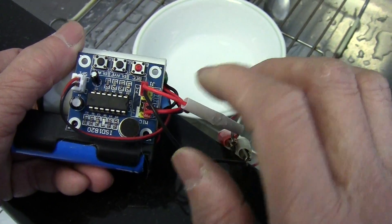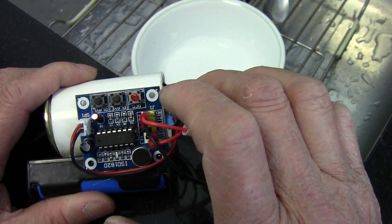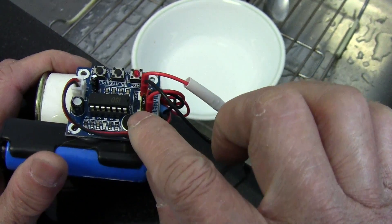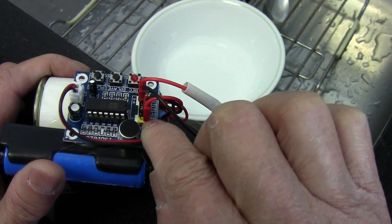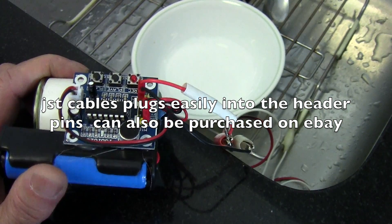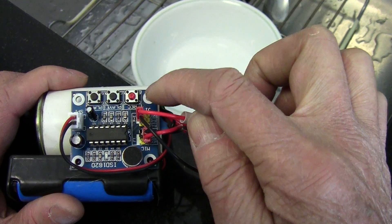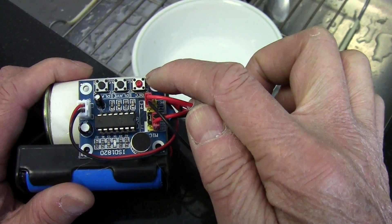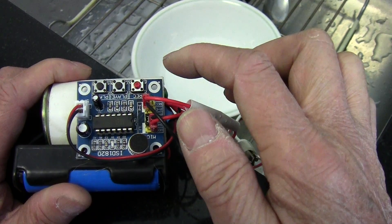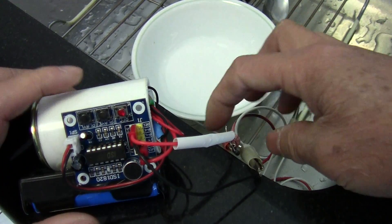And I use a JST cable to plug in for the power connection, positive and negative. And this is the speaker terminal. And this is the loop recording and playback, or actually the loop playback terminal. You plug in the JST connector.